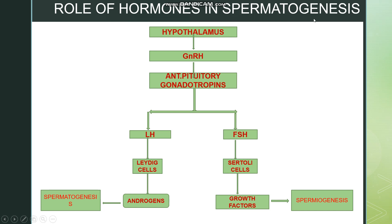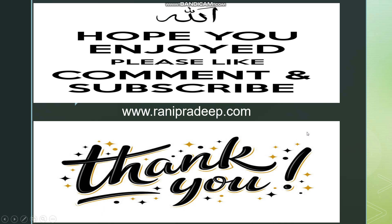Now, what is the role of hormones in spermatogenesis? The hypothalamus secretes gonadotropin-releasing hormones, which move to the anterior pituitary to release gonadotropins. The gonadotropins are of two types: luteinizing hormone (LH) and follicle-stimulating hormone (FSH). LH acts on the Leydig cells to release androgens, which promote spermatogenesis. FSH acts on the Sertoli cells to release growth factors essential for spermiogenesis.